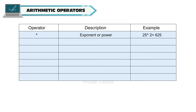Operator caret (^) denotes exponent or power. For example, 25 to the power of 2 is equal to 625. Operator asterisk (*) is used for multiplication. For example, 25 times 2 is 50.